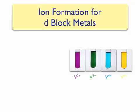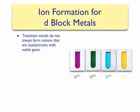So far we've only discussed cation formation for main group metals. It is very easy to predict the electron configuration for main group metals, since they tend to be isoelectronic with noble gases. However, for the d-block metals, or transition metals, this isn't always the case. Transition metals don't always form cations that are isoelectronic with noble gases. Therefore, we need to look at other factors in writing their electron configurations.